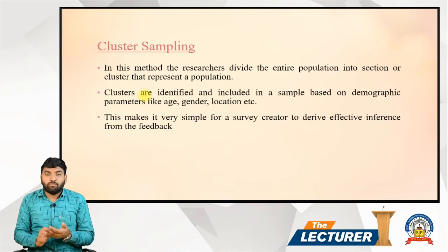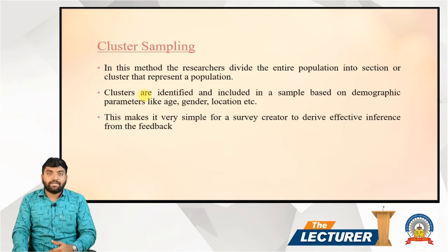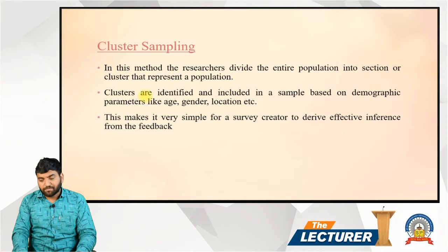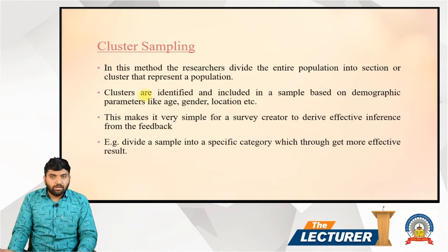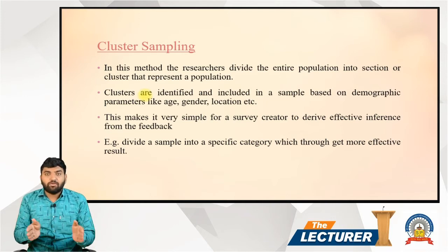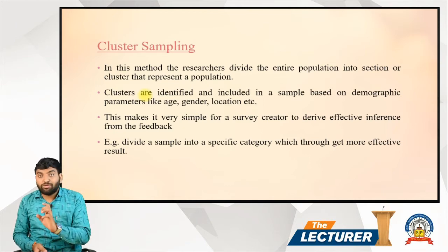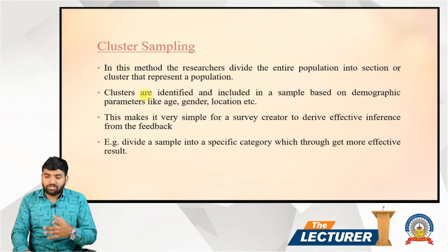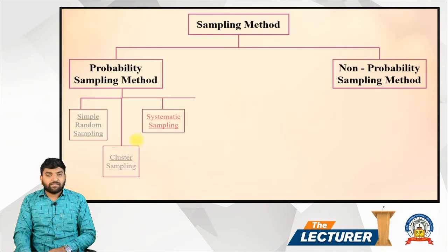Through cluster sampling I can easily get the information I need for my research. You divide the sample into specific categories to get more effective and accurate results quickly. This is cluster sampling. The third technique of probability sampling is systematic sampling. Let's see what systematic sampling means.